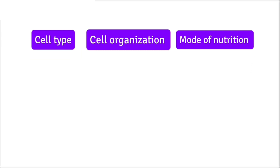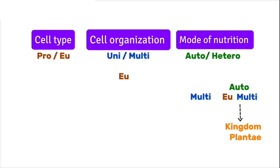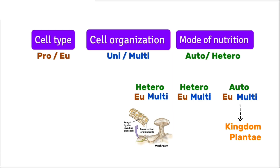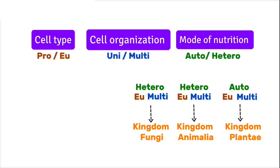Now let's see how scientists use these three criteria to classify organisms. Suppose we have an organism that is multicellular, eukaryotic, and autotrophic — meaning it makes its own food by photosynthesis. Scientists place this organism in Kingdom Plantae. Now imagine an organism that is multicellular, eukaryotic, but heterotrophic — meaning it cannot make its own food. It could belong to either Kingdom Fungi or Kingdom Animalia. If it decomposes organic matter externally and absorbs nutrients through its body surface, it belongs to Kingdom Fungi. But if it ingests food, taking it inside the body and then digesting it, it belongs to Kingdom Animalia. This small difference in nutrition makes a big difference in classification.